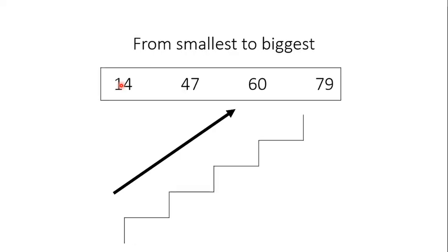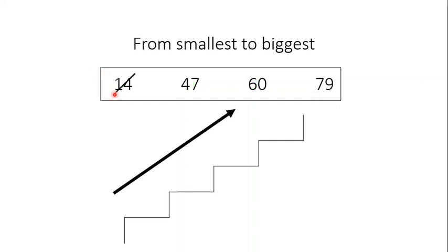Let's see another example. Here, we have bigger numbers: 14, 47, 60, and 79. So first, we will see the first digit of all these numbers — that means the 10s place. In 14 it's 1, in 47 it's 4, in 60 the 10s place number is 6, and in 79 it's 7. So now see all these numbers: 1, 4, 6, and 7. Which number is the smallest? Yes, you are correct. It's 14. 14 is the smallest.